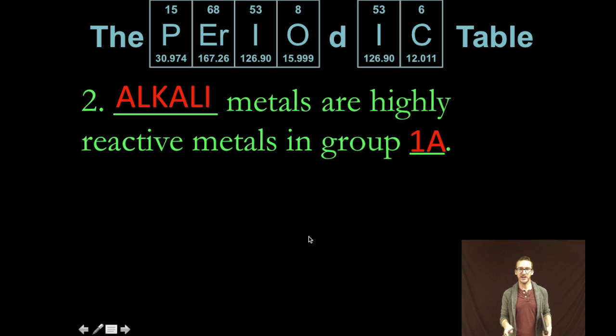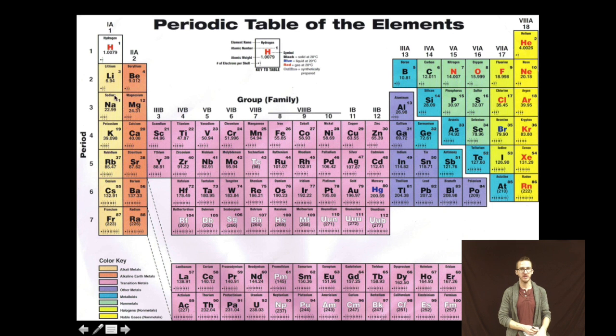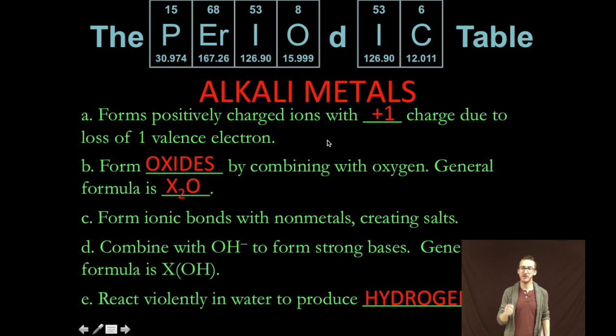Alright now let's begin to break down the different types of metals. The first classification of metals is the alkali metals. And these are a highly reactive metal group in group 1A outlined here in this pale yellow color from lithium all the way down to francium. Some important things that you need to be at least aware of now when it comes to the alkali metals. They are going to form positively charged ions with a plus one charge due to the loss of a single valence electron. They are going to form oxides by combining with oxygen. Their general formula will be X2O. They'll form ionic bonds with non-metals creating salts like sodium chloride. They'll combine with hydroxide to form strong bases with a general formula of XOH. And they will react violently with water to produce hydrogen gas. A very fun property of alkaline metals.